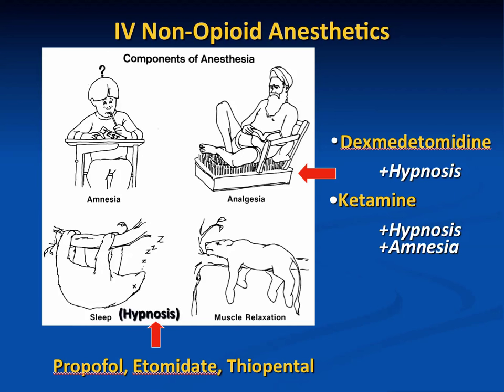If we look at the components of anesthesia — amnesia, analgesia, hypnosis or sleep, and muscle relaxation — propofol, etomidate, and thiopental are mainly hypnotic agents, while dexmedetomidine and ketamine not only cause hypnosis but have analgesic properties. Ketamine also has amnestic properties. Propofol and etomidate are hypnotic agents without analgesic properties, whereas both dexmedetomidine and ketamine have analgesic properties.